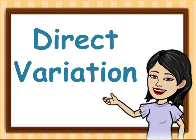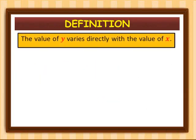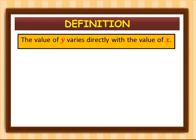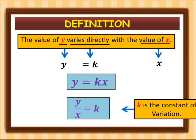Good morning. This morning let's learn about direct variation. The value of y varies directly with the value of x, represented as y is equal to k times x, or equivalently y over x is equal to k, where k is the constant of variation.